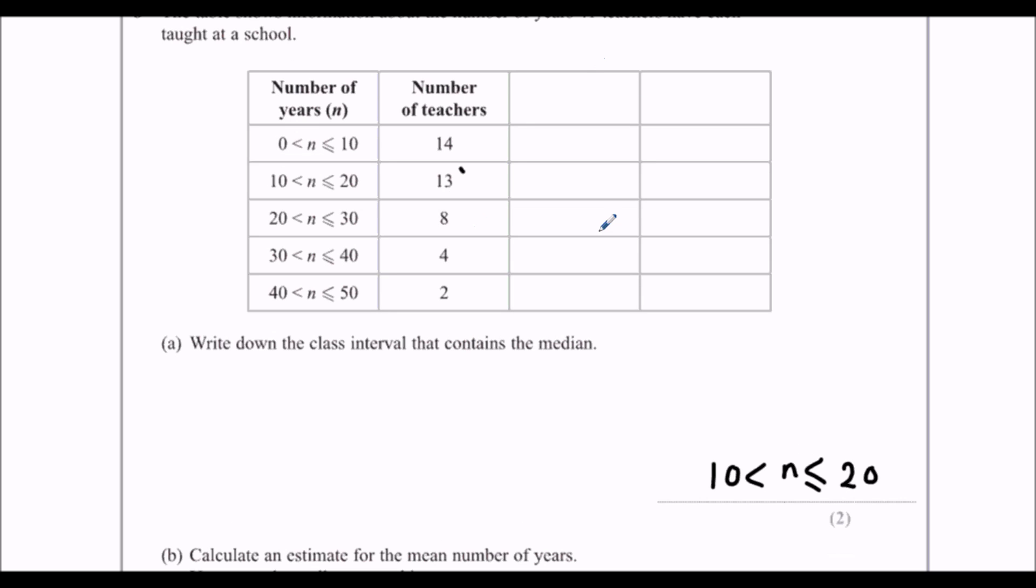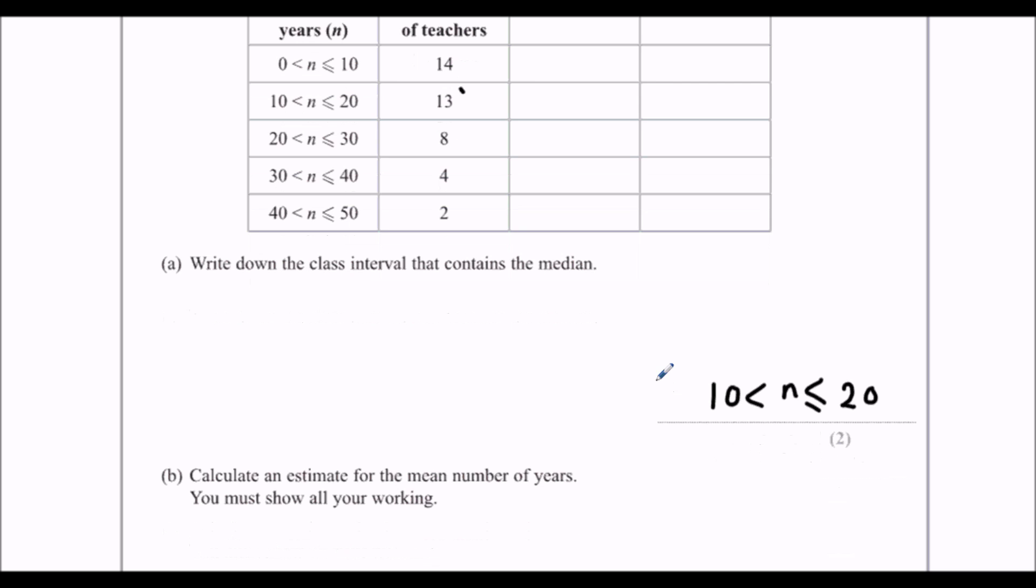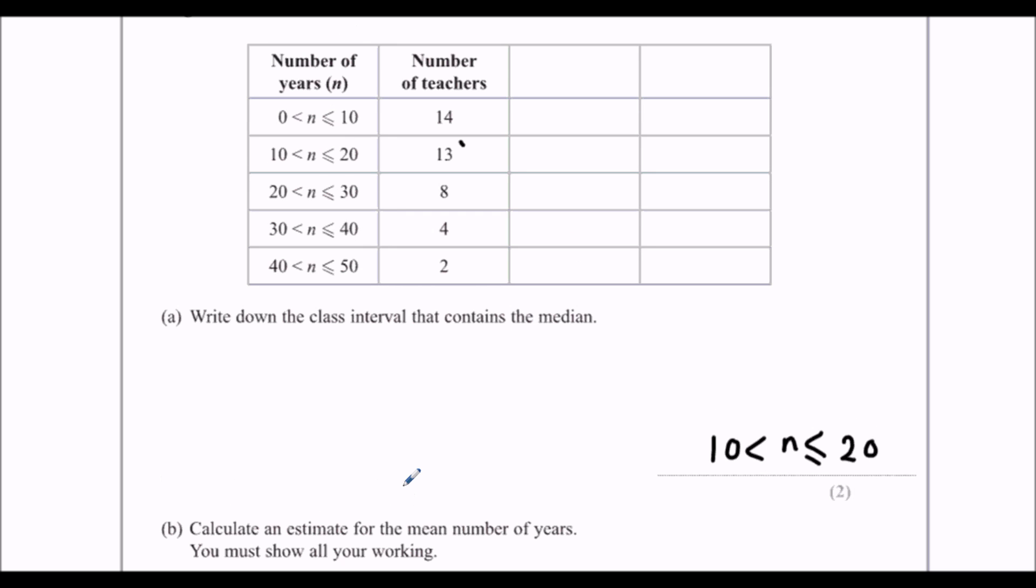Now, you can see these extra boxes are here, so we know there's another question coming, and it's an estimate for the mean number of years. So we need to know the mean. Whenever we need to estimate the mean, that's because we don't know exactly how many years these 14 teachers have been teaching. So because we don't know, we're going to guess, and that's what makes an estimate.